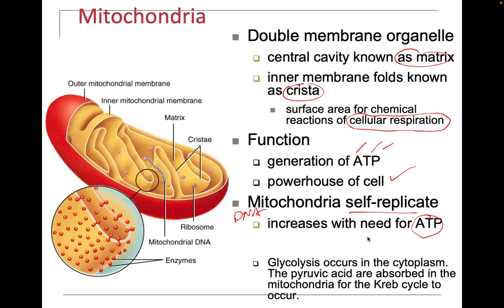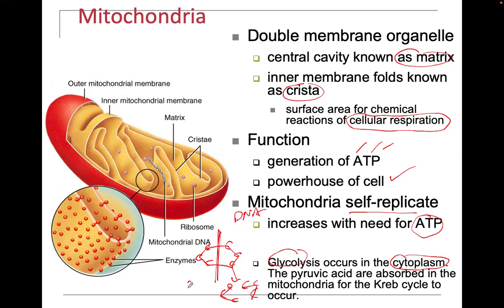To create energy, the body takes glucose — a six-carbon sugar — and breaks it down, splitting it into two three-carbon sugars. That's called glycolysis, and it occurs in the cytosol of the cell. The resulting pyruvic acid, if oxygen is present, can enter into the mitochondria for the Krebs cycle to take place. Within the mitochondria, the Krebs cycle and electron transport chain help produce energy.